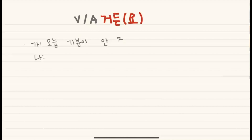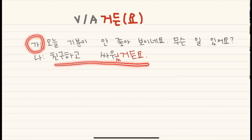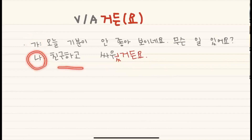보이네요. 무슨 일 있어요? 친구하고 싸웠거든요. I can see you're not in a good mood — what happened? I fought with my friend. Since 가 cannot know whether 나 fought or not, 나 should explain about it using 거든요.